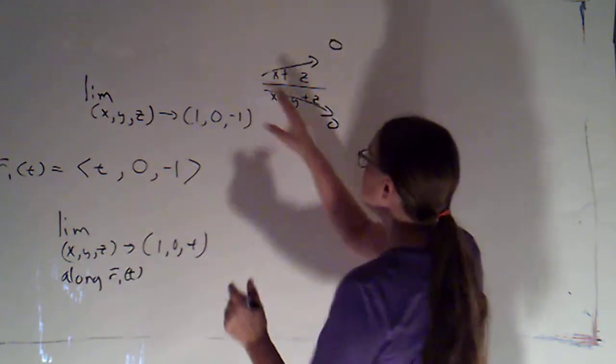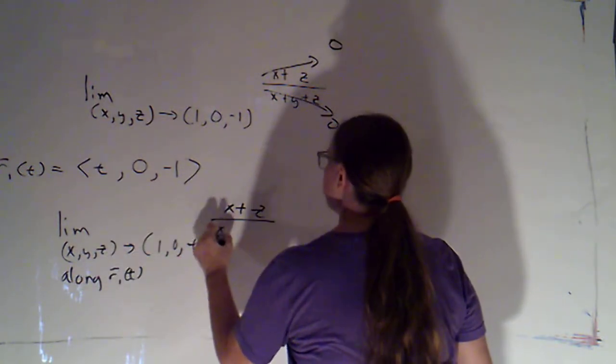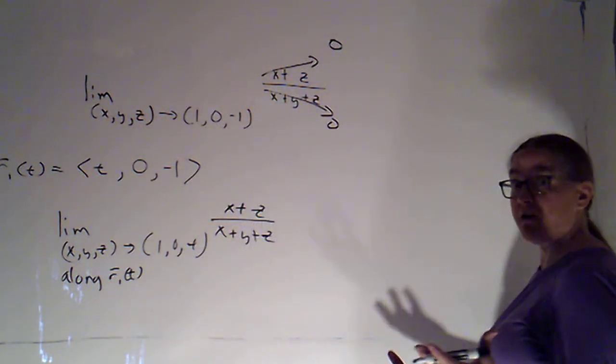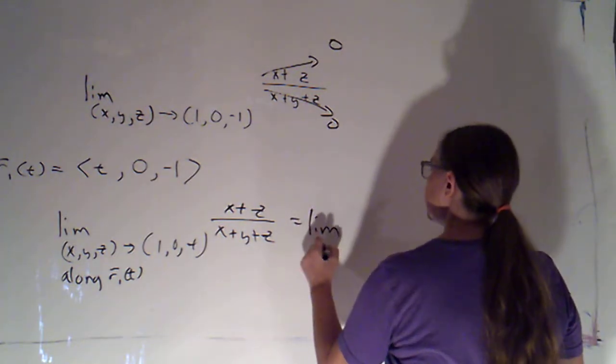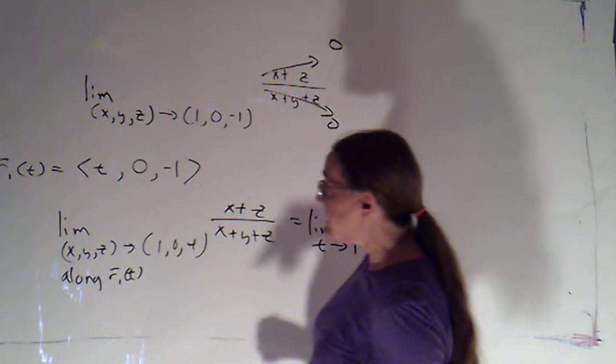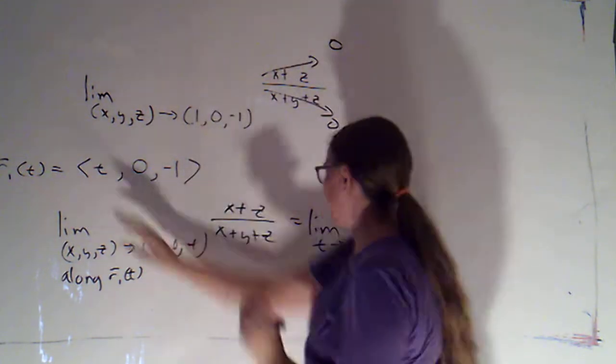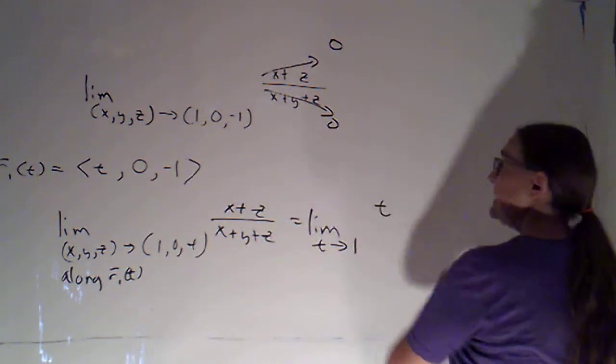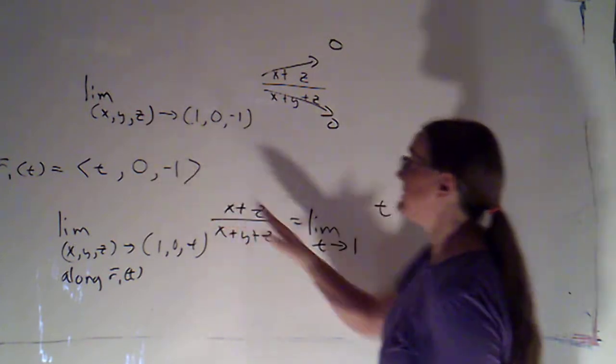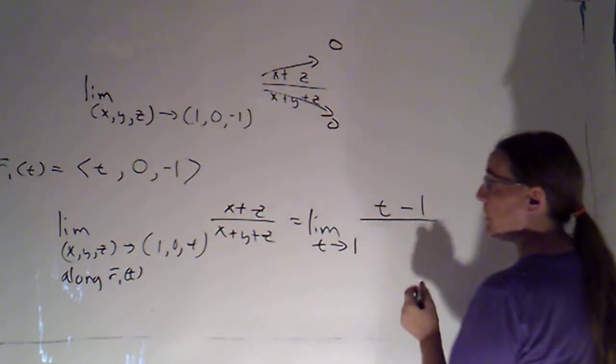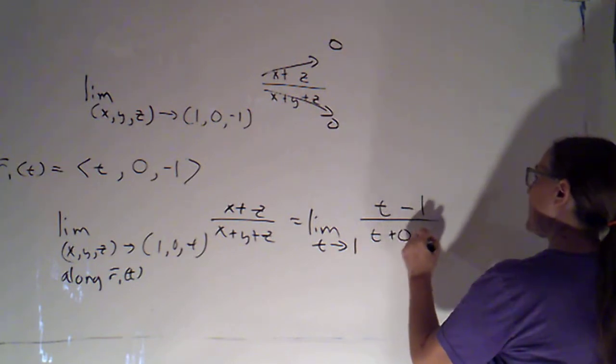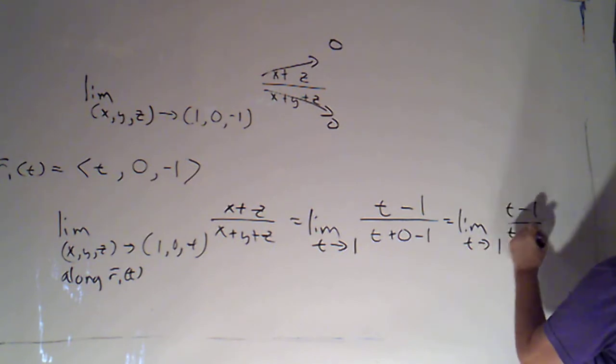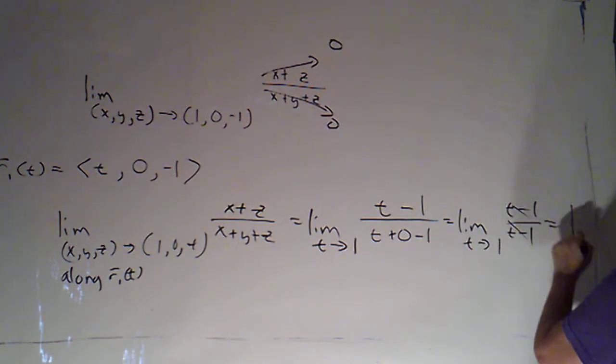Describing it in terms of x, y, and z, so I just copy the function as is: (x + z)/(x + y + z). But now I'm going to describe it in terms of my just one variable, my parameter t. So this would be the limit as t approaches... we said we need t to be 1 if we're going to be at this point, so as t approaches 1. I replace x with t, y with 0 and z with negative 1. So this becomes (t - 1)/(t + 0 - 1). Well, that's the limit as t approaches 1 of (t - 1)/(t - 1). That cancels to just give me 1.